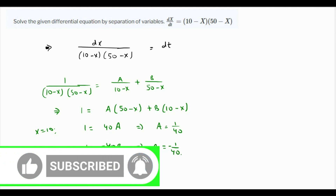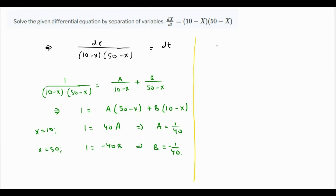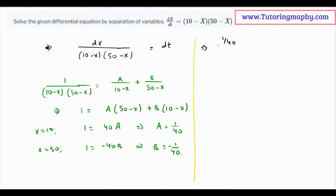Now we have the values of A and B, so this can be integrated. We rewrite it with the values of A and B: it's (1/40) over (10 minus x) dx, minus (1/40) over (50 minus x) dx — the minus because B is minus 1 over 40 — and this equals dt.